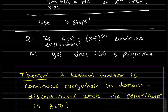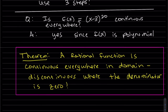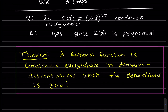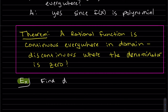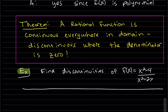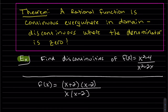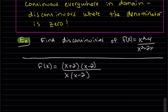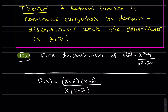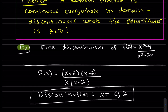Here's a theorem: a rational function is continuous everywhere in its domain; it's discontinuous where the denominator is zero. The domain is just everywhere the denominator is not zero, so the domain is where our function is continuous. To find the discontinuities of a rational function, we factor it. Don't be fooled — just because an x minus 2 cancels doesn't mean it's deleted; you'd be missing a discontinuity if you canceled it. Everywhere the denominator is zero is a discontinuity, so x equals 0 and x equals 2.